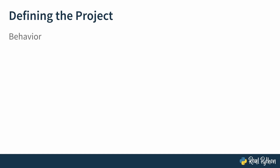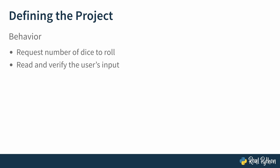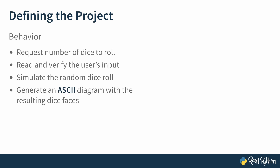What are the behaviors? You might have unpacked the steps a little bit differently, but here's the way we've broken them down. The app first has to request the number of dice to roll, then read and validate the user's input. In the background, do something to simulate the randomness of a dice roll, take that result and create an ASCII diagram with the resulting dice faces, and finally display that to the user.